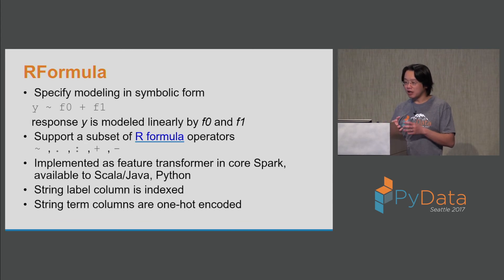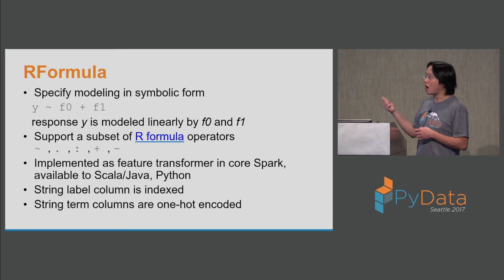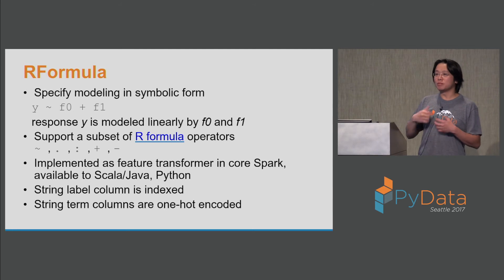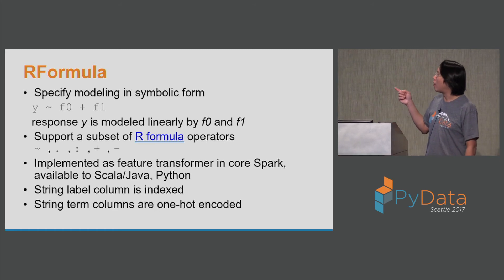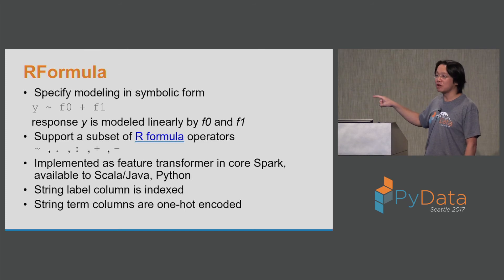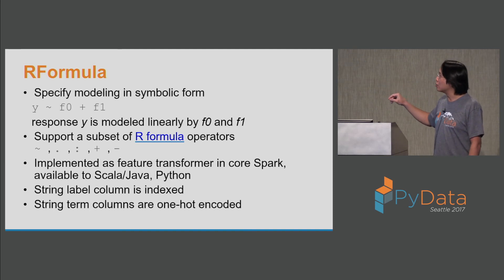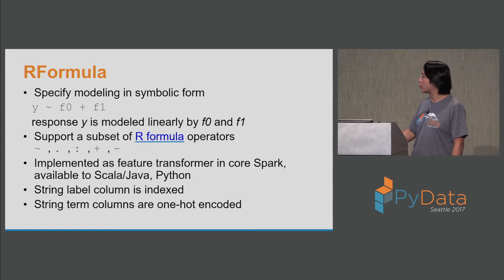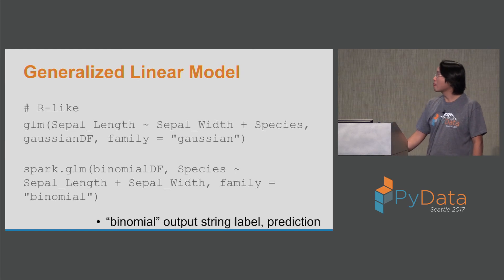Before going further with SparkR and the pipeline model, a key concept unique to R is the R formula. The idea is you use a symbolic form to represent the model you want to build. For example, Y is modeled linearly by F0 and F1 — you express your features and label that way. This is actually implemented as a feature transformer in core Spark, which means you can use it in Python as well. There's also syntactic sugar: the label column is automatically indexed, and categorical columns are automatically one-hot encoded, so you don't have to do extra work before passing data to the machine learning model.